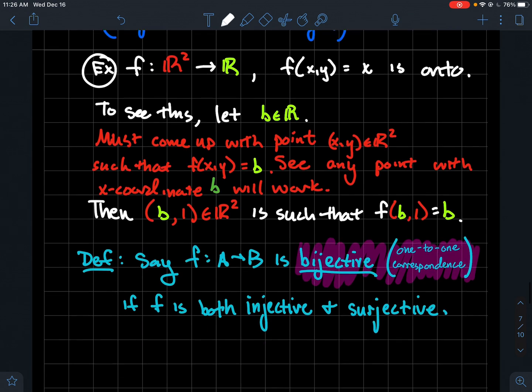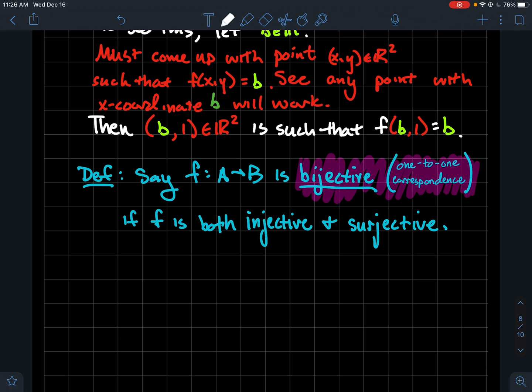The last thing that we're going to look at is we'll say that a function from A to B is bijective. Another term for that or different terminology for that, rather, is one-to-one correspondence. So when you see those two things together, one-to-one correspondence, that's the same thing as being bijective. But what is it? It just means that it's injective and surjective. So it's both. It's one-to-one and it's onto. So whenever a function has both properties, it's bijective.